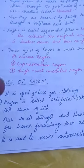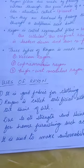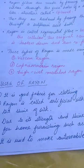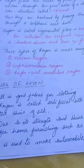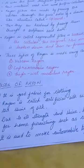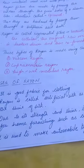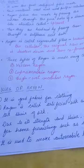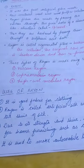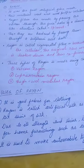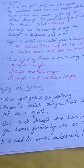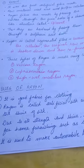Due to its strength and shine, Rayon is used for home furnishings such as bedspreads, curtains, and carpets. Since it is also a very strong and stable fiber, it is used to make automobile tire cords.